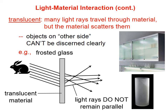They're scattered, and so they travel in these sort of random directions. As an observer on the right, that information that is carried by each light wave is now jumbled, and so we don't clearly see the rabbit.